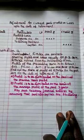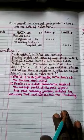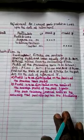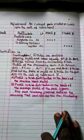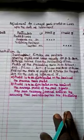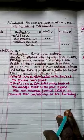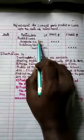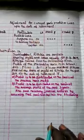If a partner is going to be retired from the partnership firm in the middle of the year and we need to prepare the profit and loss account, we can prepare the Profit and Loss Suspense Account. With the help of the Profit and Loss Suspense Account, we can settle the retiring partner's capital account.